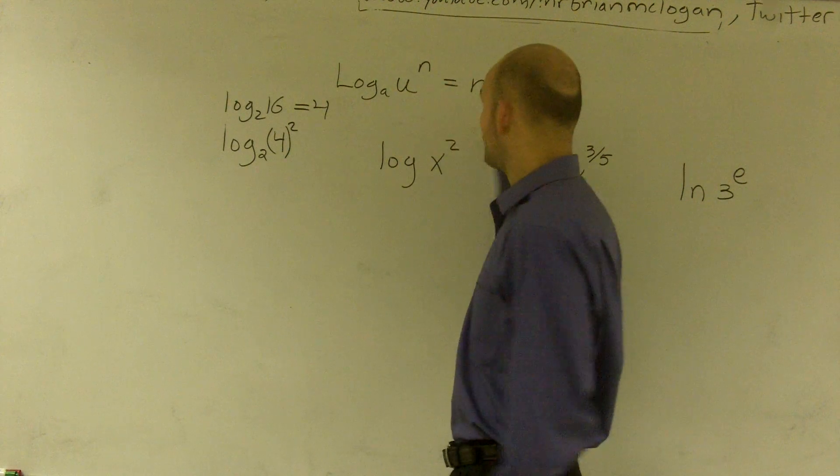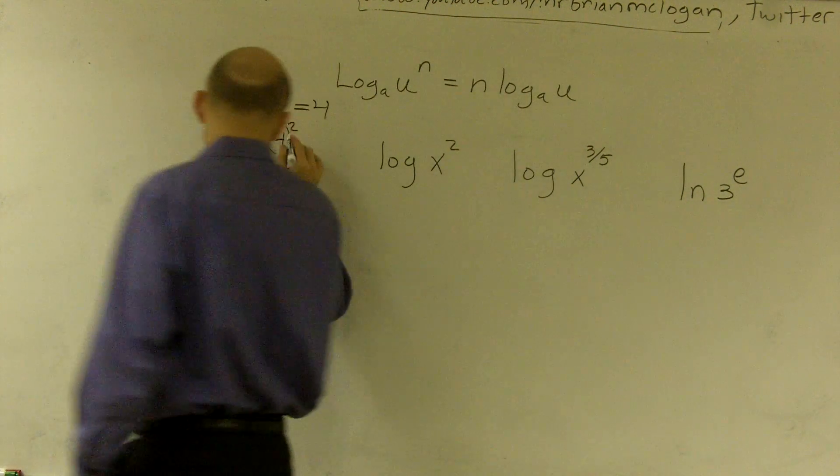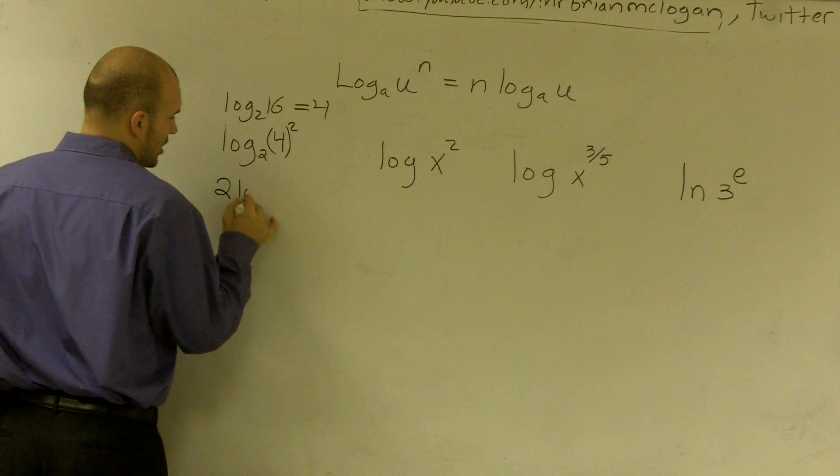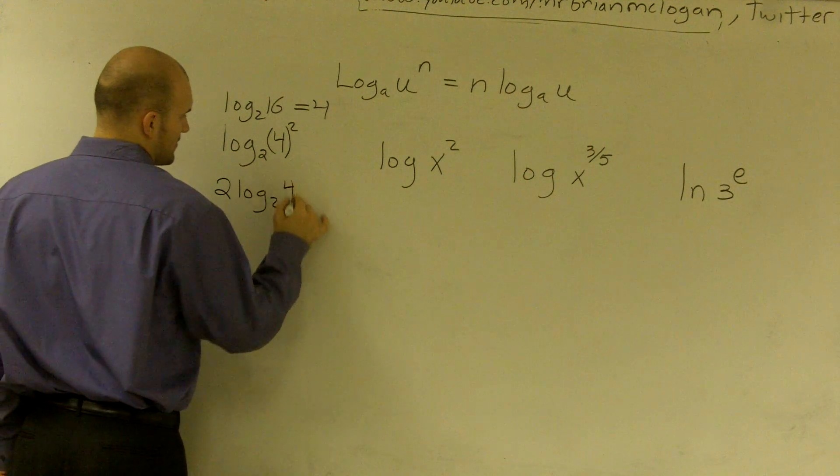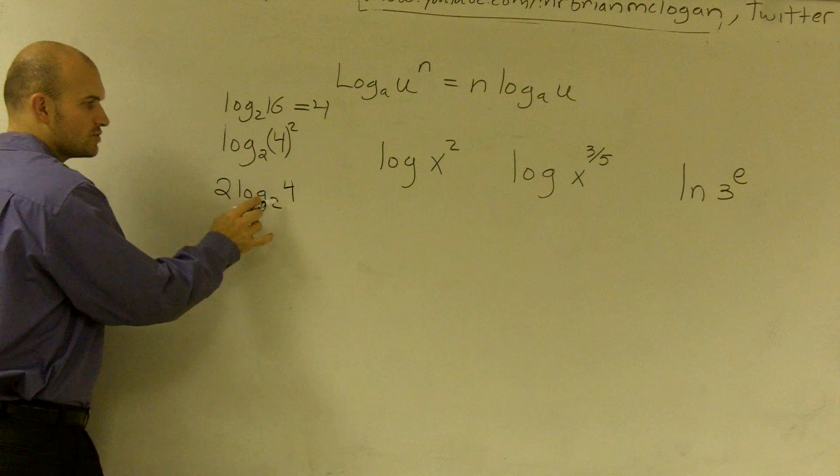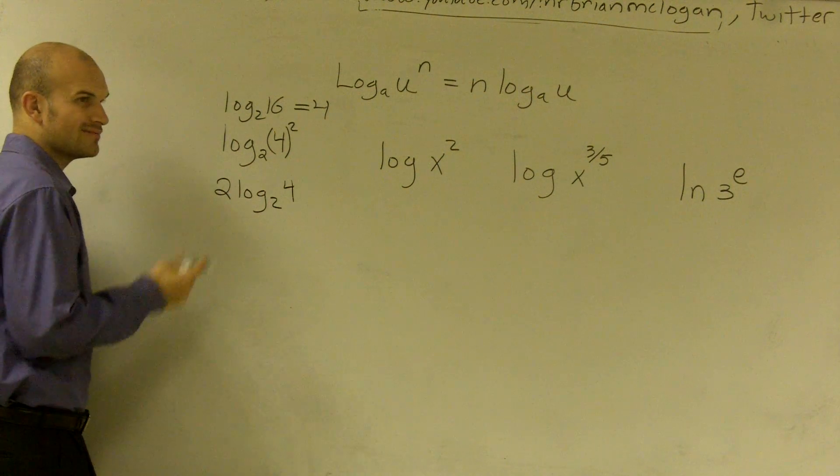Now, if I was about to follow my little method here, I would take this exponent and I'd put it in front of my log, so I'd have 2 times log base 2 of 4. Well, 2 raised to what power gives you 4? That's 2, right?